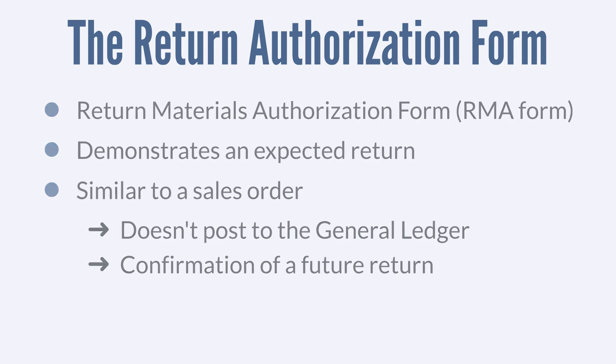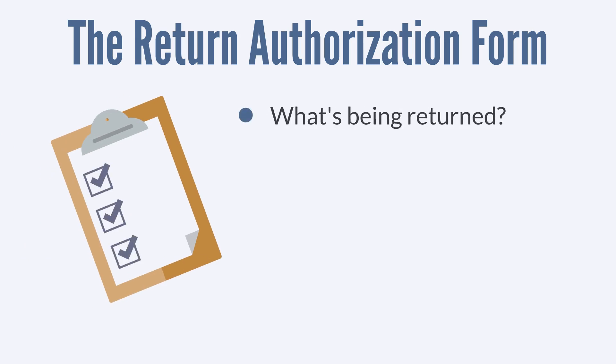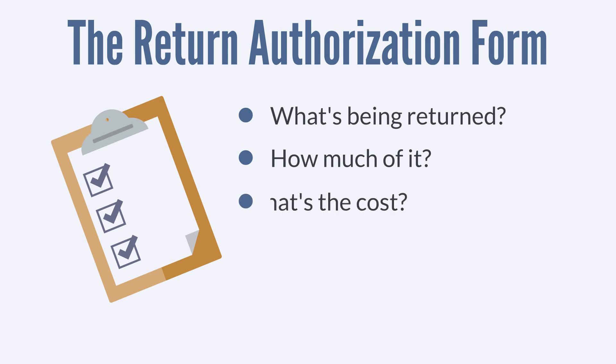Return authorization forms need three key pieces of information. First, they need to specify the items that are being returned. They also need to specify the amounts of those items. And finally, the return authorization form needs to include the prices of all the items being returned.